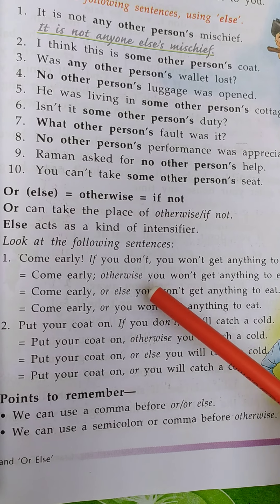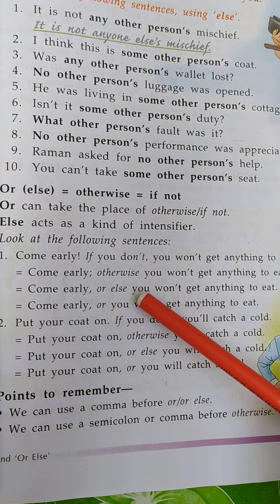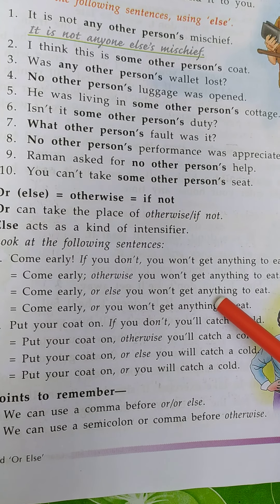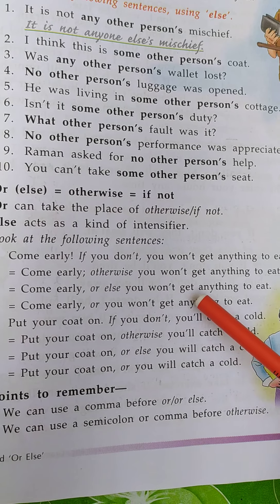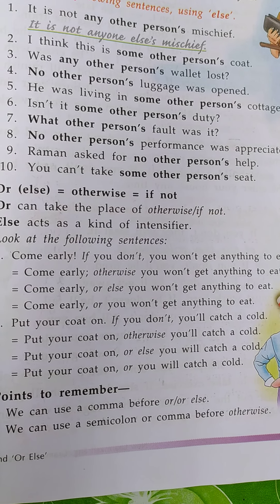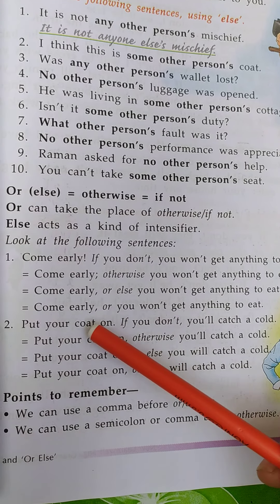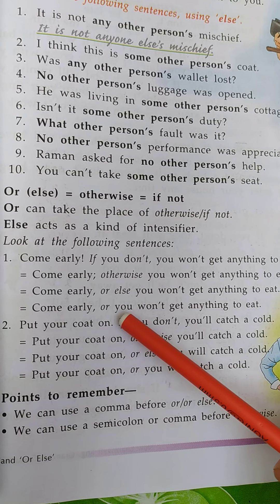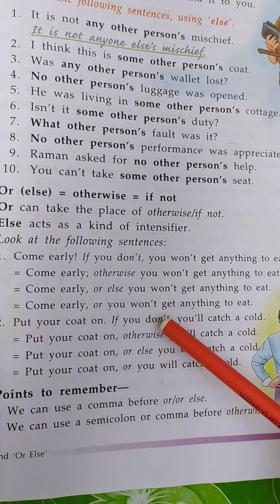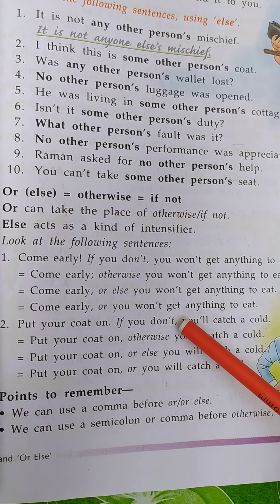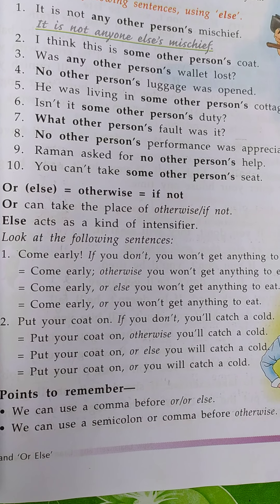इस sentence को हम ऐसे भी लिख सकते हैं: Come early, or else you won't get anything to eat. Or we can also write: Come early, or you won't get anything to eat. जल्दी आना नहीं तो आपको खाने के लिए कुछ नहीं मिलेगा। The meaning is same.